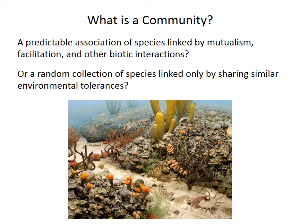A biological community at its simplest is just a group of species that live together in an area, but why do those specific species co-occur together? On one extreme, communities could be predictable associations of species linked to each other by positive interactions like mutualism or facilitation. At the other end, maybe communities are just haphazard collections of species that only happen to coexist because they share similar environmental requirements. The reality is no doubt somewhere between these two end members, but let's see what the fossil record can tell us.